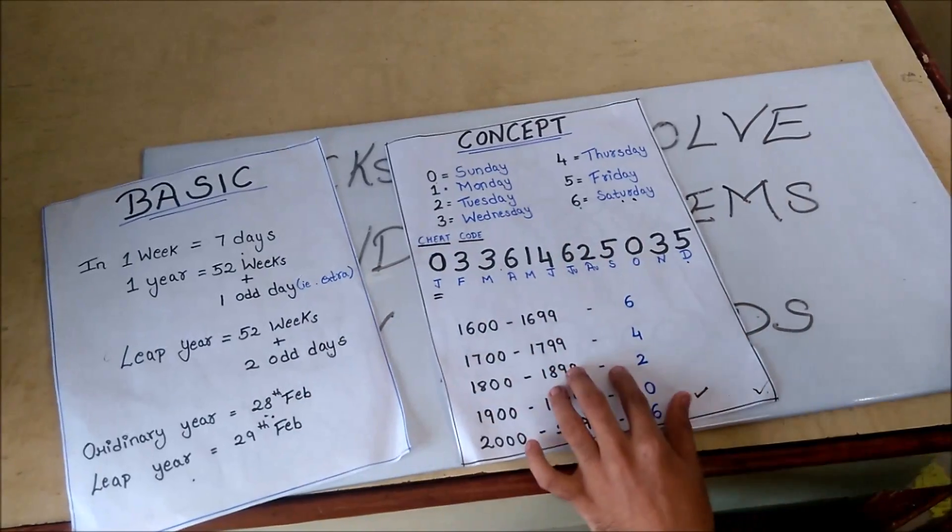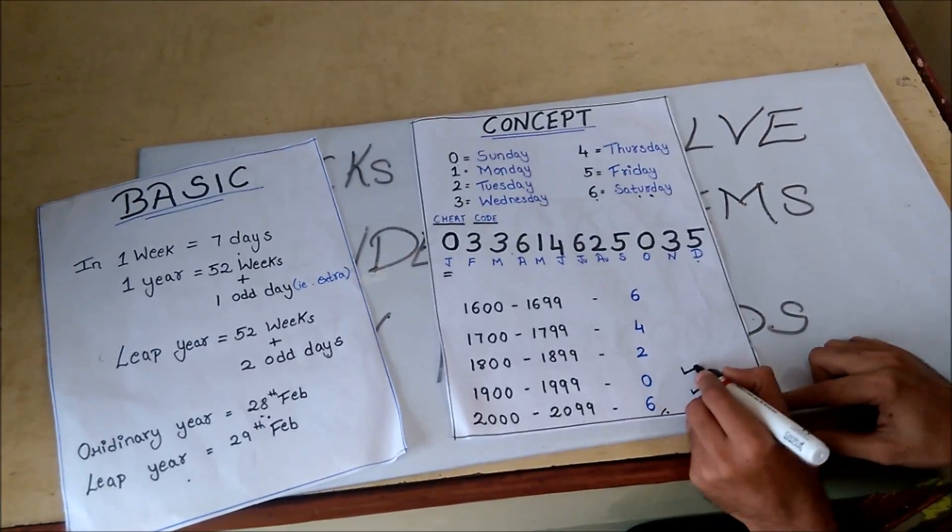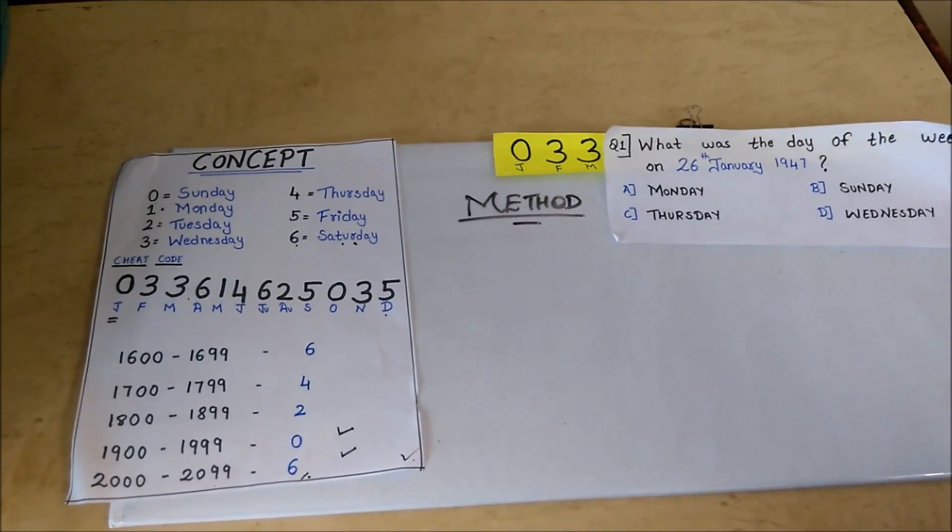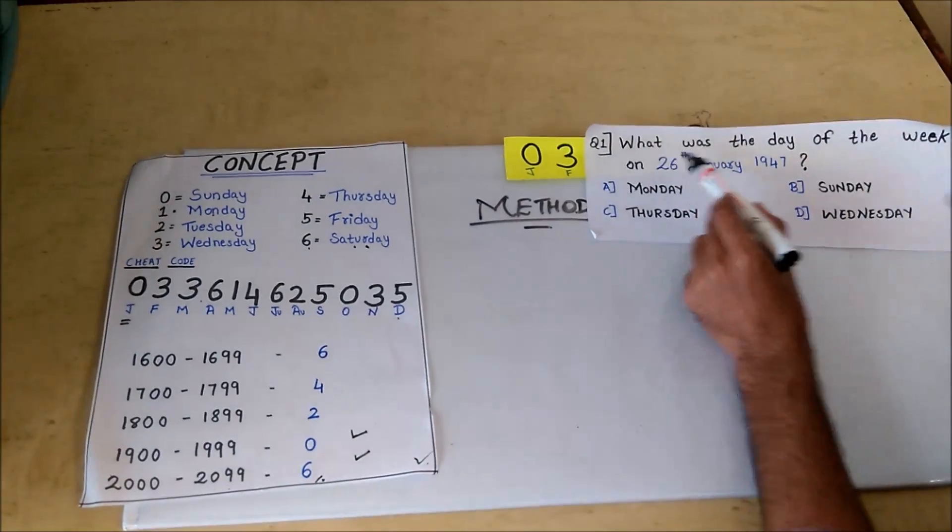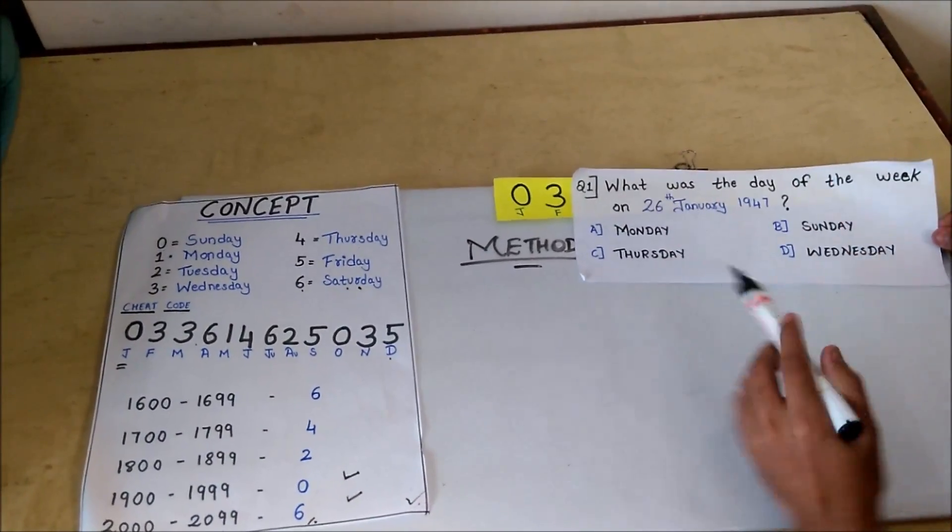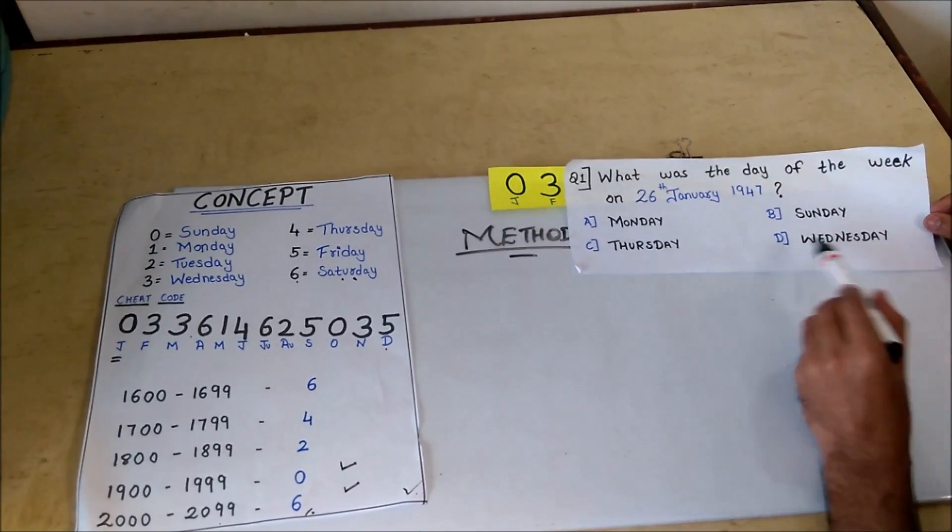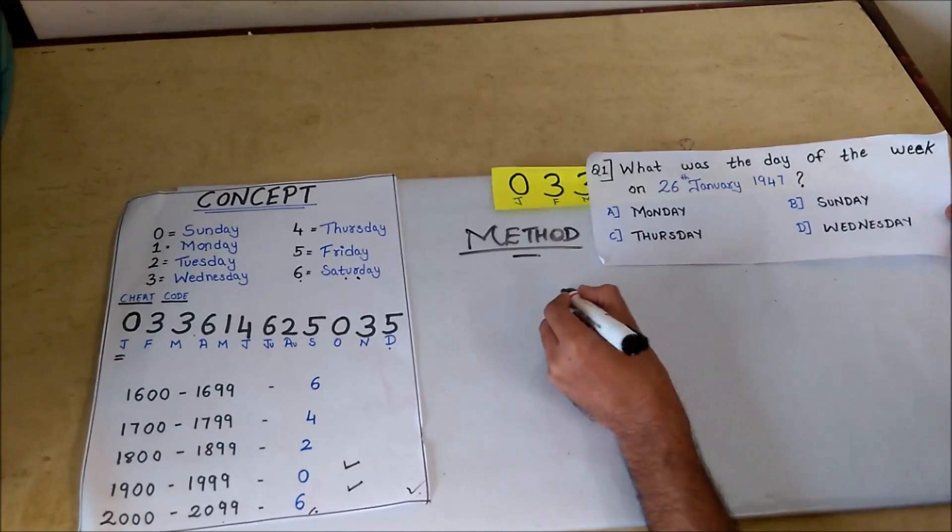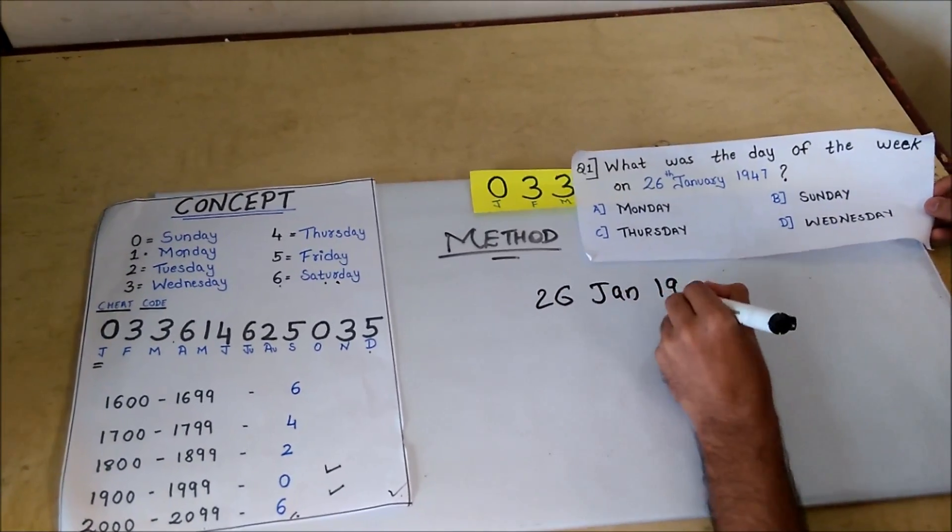As our basics and concepts are clear, now we will go further to the problems. Now see the first problem. What was the day of the week on 26th January 1947? Options are A: Monday, B: Sunday, C: Thursday, and D: Wednesday. So let's find out what was the day on 26th January 1947.